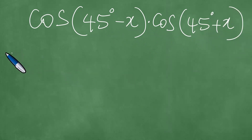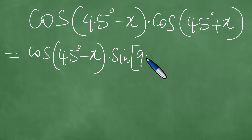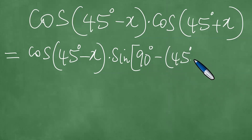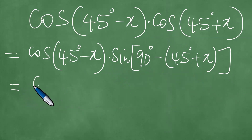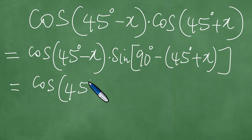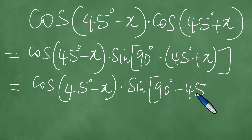What this is, is as follows: this is the same as the cosine of 45 degrees minus x, multiplied by the trigonometric sine of 90 degrees minus into 45 degrees plus x. There's a co-function change where the cosine function changes to the sine function at 90 degrees minus the argument. So this is cosine of 45 degrees minus x, multiplied by the trigonometric sine of 90 degrees minus 45 degrees minus x, by distribution.